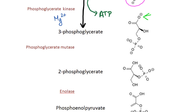The next step is going from 3-phosphoglycerate to 2-phosphoglycerate. This reaction is carried out by phosphoglycerate mutase. Here you can see that the phosphate group moves from one carbon to another.